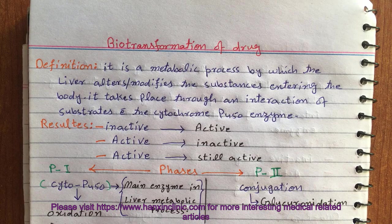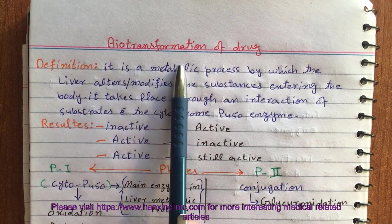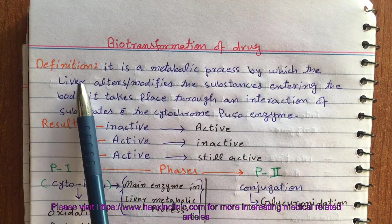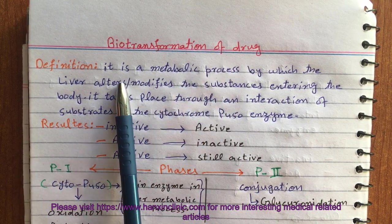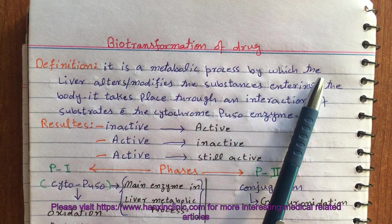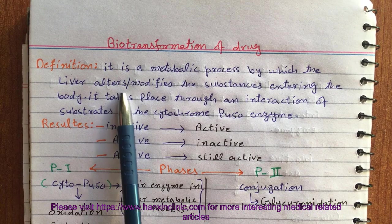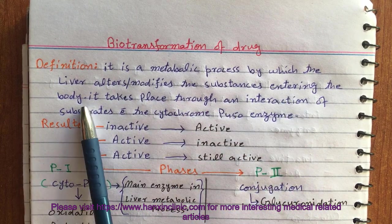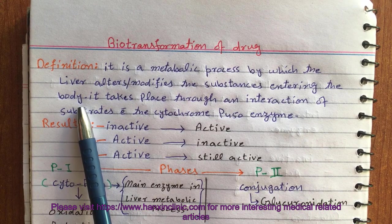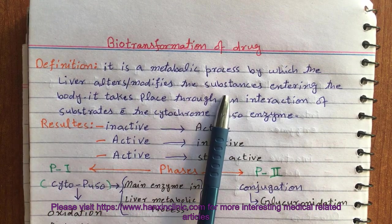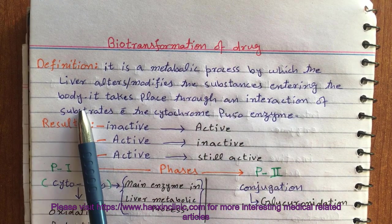Hello everyone, how you doing there? Our today's topic is biotransformation of drug. The definition of biotransformation of drug is it is a metabolic process by which the liver alters or modifies the substances entering the body. That means our liver will change these substances that are entering into our body.